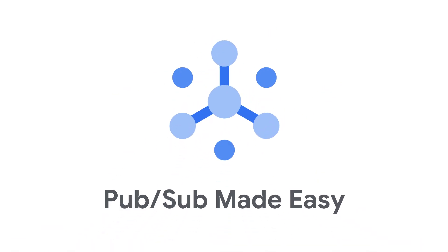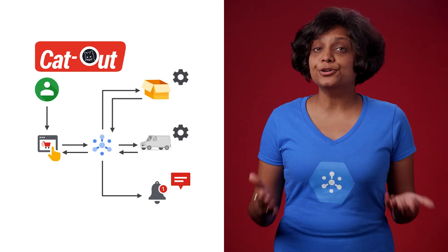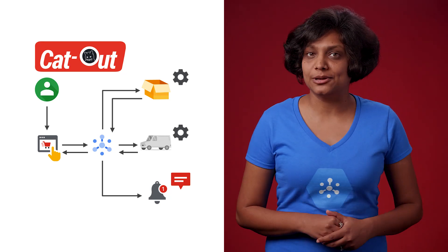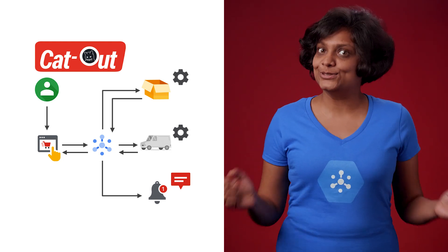Are you ingesting a large amount of data for analysis, or looking to simplify the development of event-driven applications? Then stay tuned to learn more about Cloud Pub/Sub. In the last episode, we looked at CatOut's asynchronous order processing service with and without Cloud Pub/Sub. We also learned how Cloud Pub/Sub is perfect for such use cases to scale seamlessly for millions of messages. Today, we will consider our CatOut example again and see how Cloud Pub/Sub helps CatOut expand their application globally.